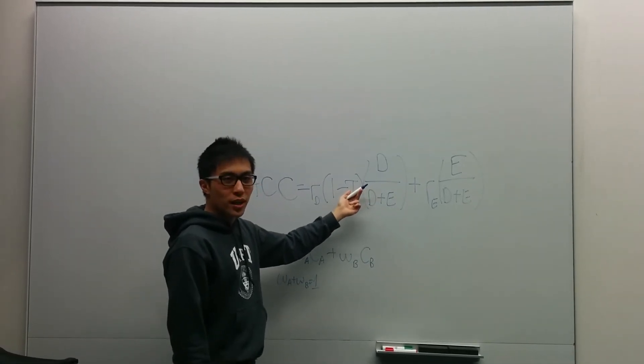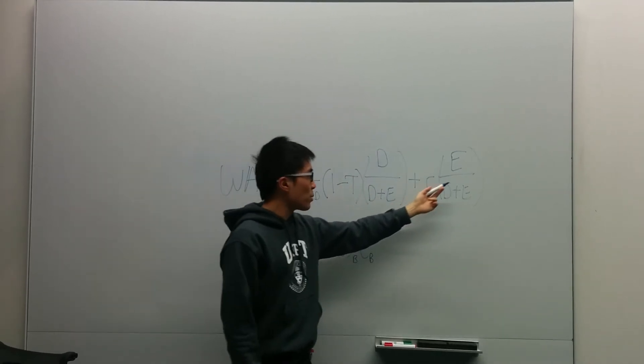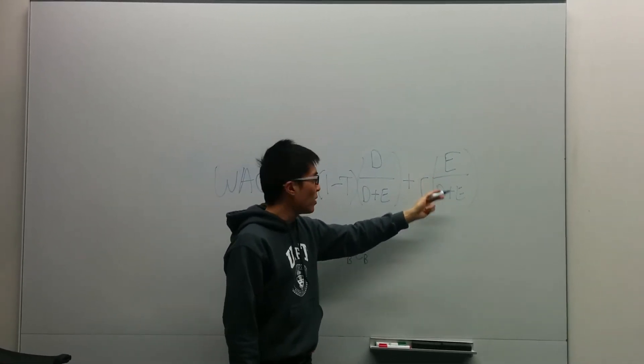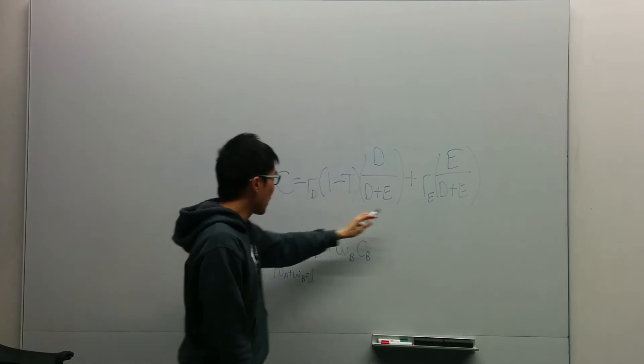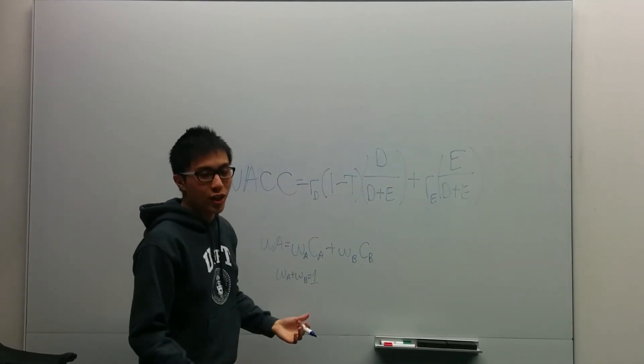This represents the proportion of the firm's capital structure in debt. This represents the proportion of the firm's capital structure in equity. And then that's the cost of equity, that's the cost of debt, and that's the after-tax cost of debt. So essentially it just weights the two together.